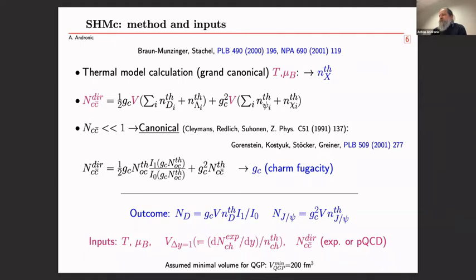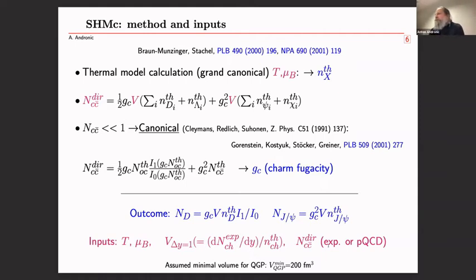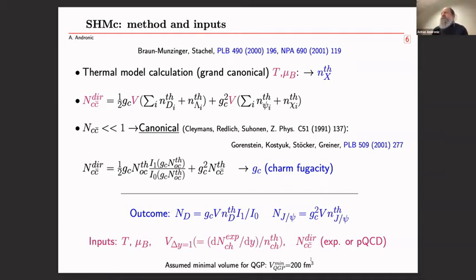T, mu_b, and volume are fixed from the UDS sector. N_cc-bar pairs are taken from experimental data with pQCD guidance. We also assume a minimal QGP volume of 230 fm³, which regulates in a rather primitive way how the model evolves toward peripheral collisions with very low participant numbers.